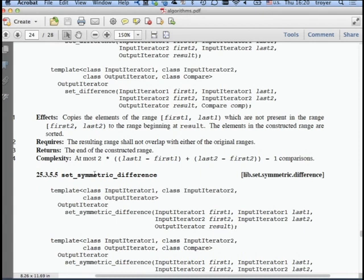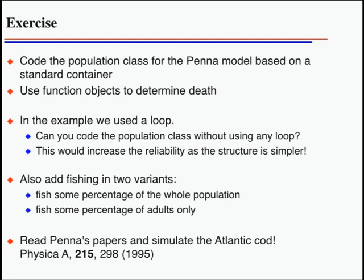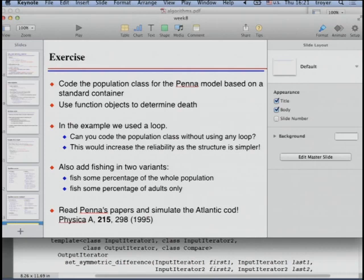There's also min and max, and max_element and min_element give you an iterator pointing to the largest or smallest element in a sequence. Now you can use all these functions to write much of your code without explicit loops—searching, sorting, copying can all be replaced by calls to the standard library. In principle, you could write your panda simulation without a single loop.